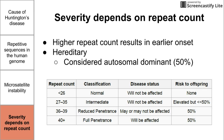It gets worse with every generation as they continue to produce more repeats of that CAG sequence in the genome — like a positive feedback loop. Full penetrance is usually considered to be 40 or more repeats, where the person with that genome will almost certainly be affected. Since this disease is autosomal dominant, there is a 50% chance of passing this condition on to offspring.